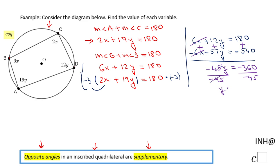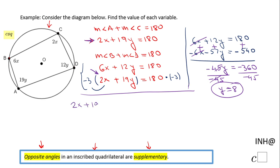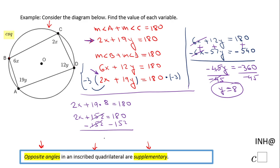We found Y, now we need to find X. I'll use the simplest equation: 2X plus 19Y equals 180. Since Y is 8, that gives us 2X plus 152 equals 180. Subtracting 152 from both sides gives 2X equals 28, and dividing by 2 gives X equals 14.